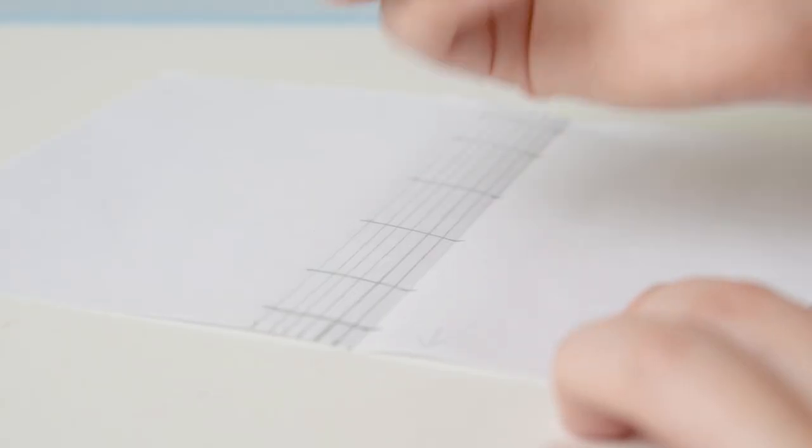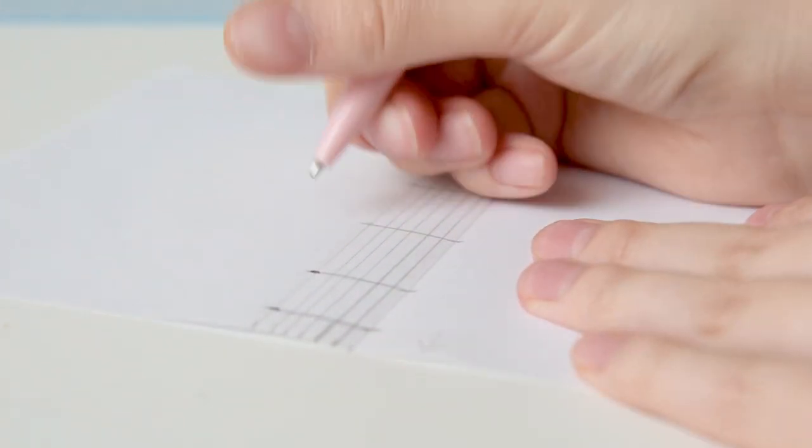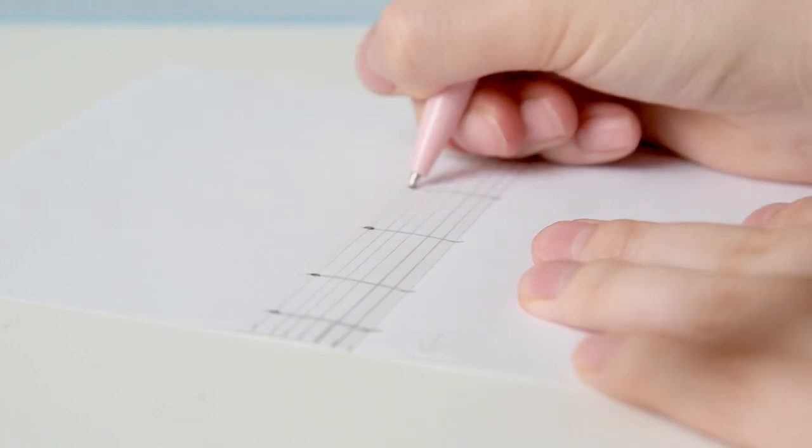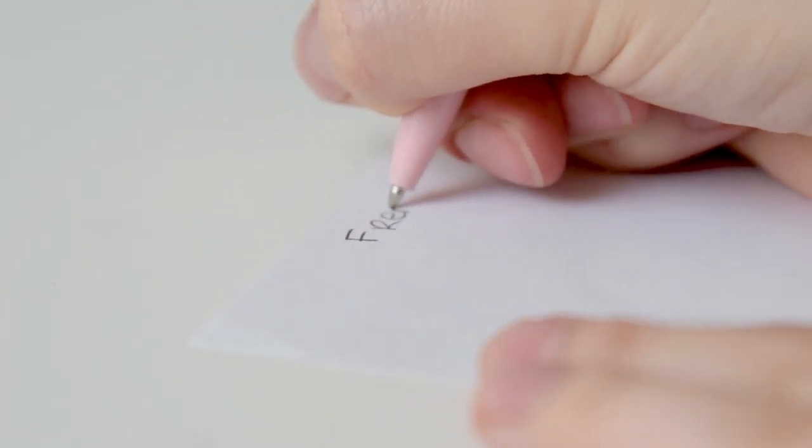On all the places where the lines cross, this is where the holes are going to be. You want to mark this clearly, so place a dot with a pen on all of these places. Then make sure to label it.